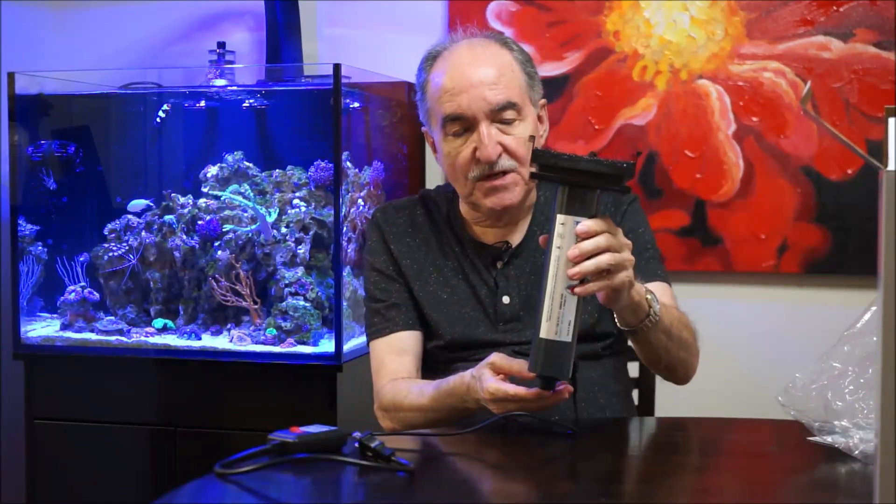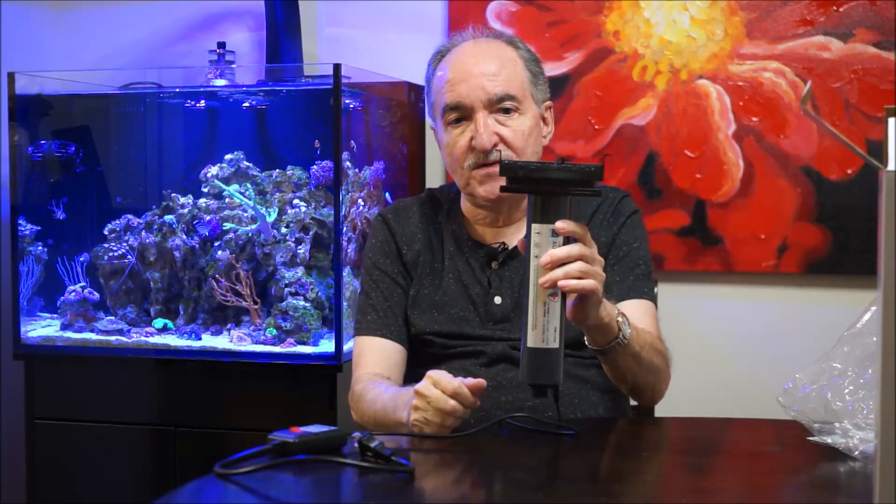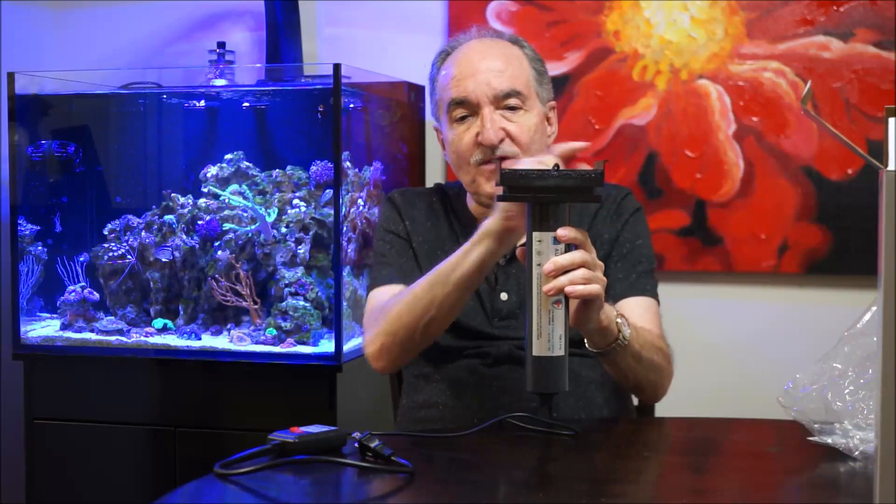These types of UV sterilizer are gravity-fed. So what happens is, for instance, I'm going to place it on this corner where the filter sock is. These rivets are the same rivets that the filter sock has. So you take the filter sock off and you just lower it.